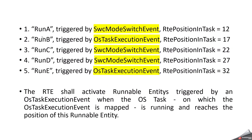Here is an example with runnables A, B, C, D, and E. Runnable A is triggered by a software component mode switch event with position in task set to 12. Runnable B has an OS task execution event with position 17, and runnable E also has an OS task execution event with position 32. There are also mode switch events at positions 22 and 27. Whenever the OS task is executed, the RTE shall activate the runnable entities triggered by the OS task execution event — when the OS task to which the event is mapped is running and reaches the position of the runnable entity, the runnable is activated.